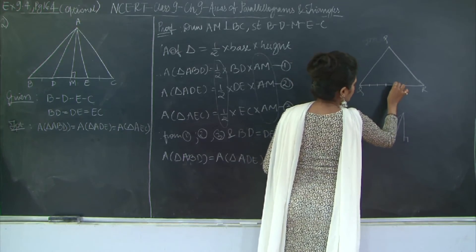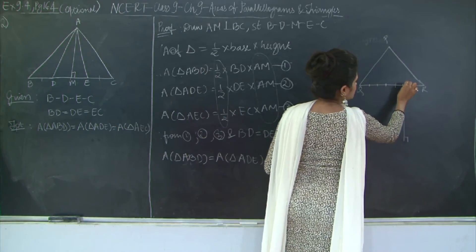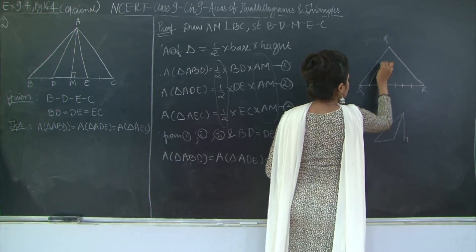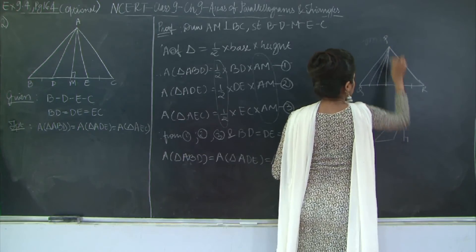So I will say how many equal parts? 1, 2, 3, 4, 5, 6, 7. And I join these points to the opposite vertex.